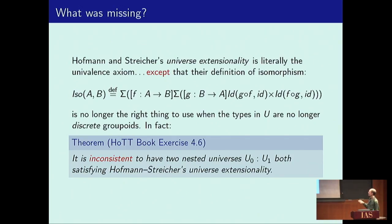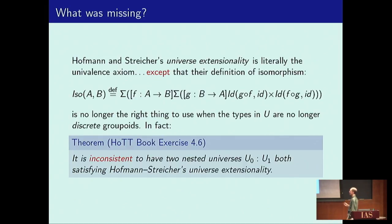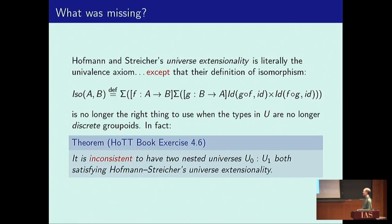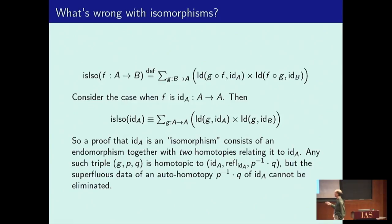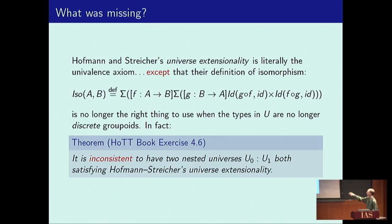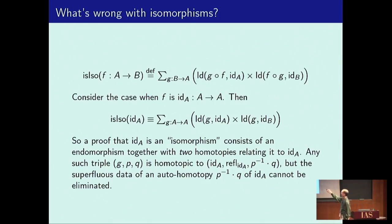The only thing missing is that their definition of isomorphism only works in the case of the universe of discrete groupoids. If you try to write down their notion of universe extensionality using this definition of isomorphism and you have two nested universes that both satisfy that property, then that's inconsistent — you can prove false. This is an exercise in the Homotopy Type Theory book. If I peel off the F here, then the G and the two homotopies are what you might call a witness that F is an isomorphism.